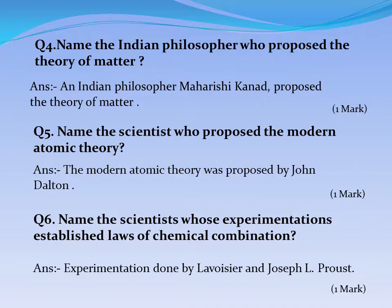Question No. 4: Name the ancient philosopher who proposed the theory of matter. Answer: An Indian philosopher, Maharshi Kanad, proposed the theory of matter. Question No. 5: Name the scientist who proposed the modern atomic theory. Answer: The modern atomic theory was proposed by John Dalton.